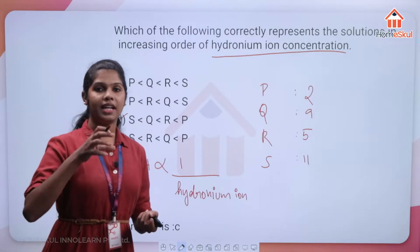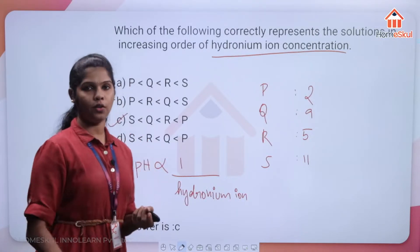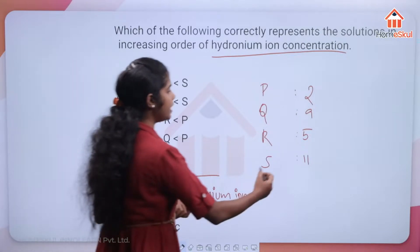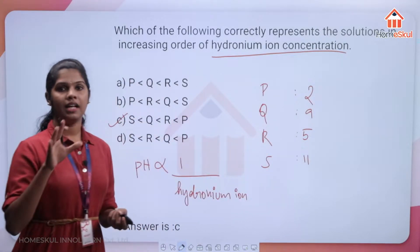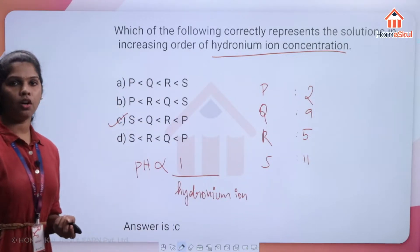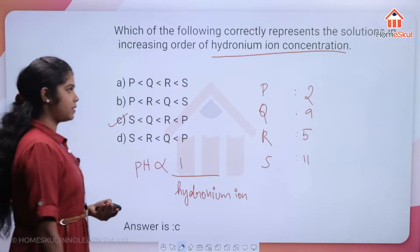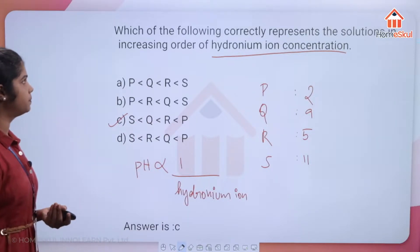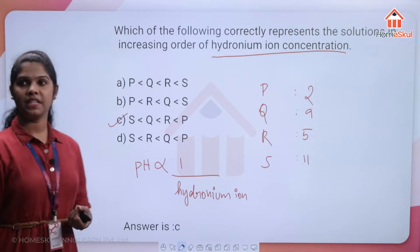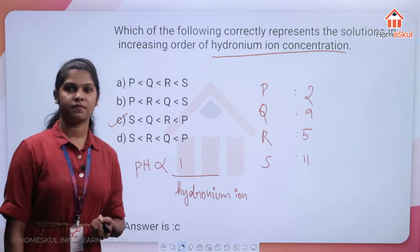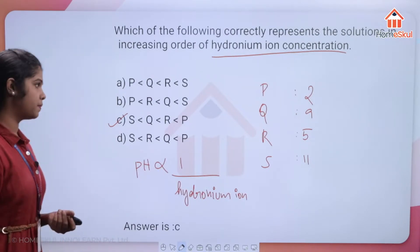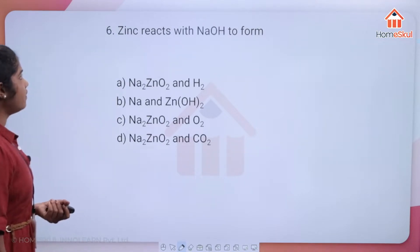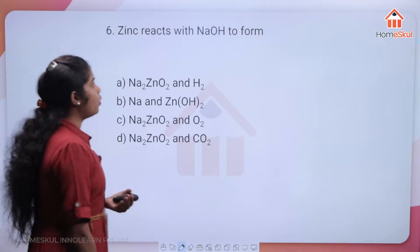A pH of 11 means it will have the least hydronium ions, so the increasing order of hydronium ion concentration follows decreasing pH. Option C is correct.